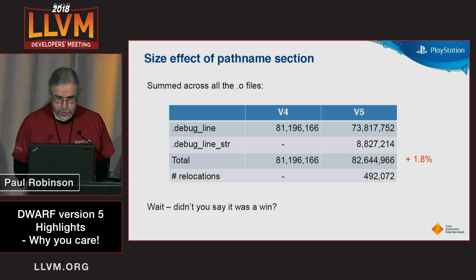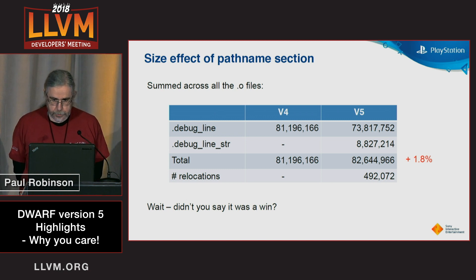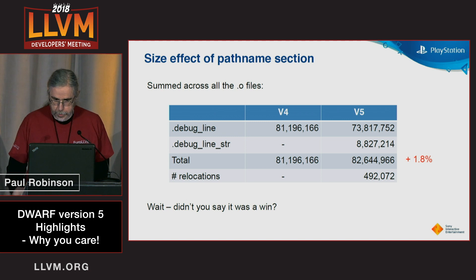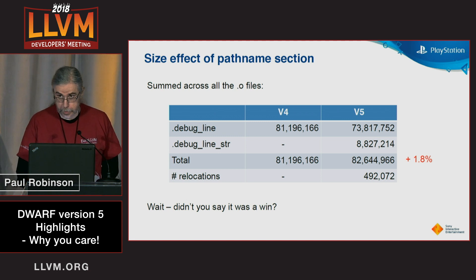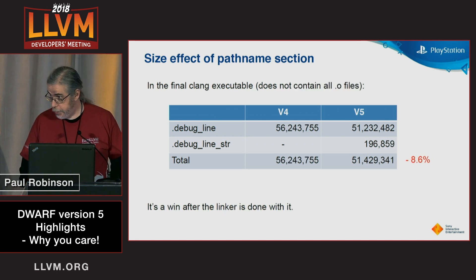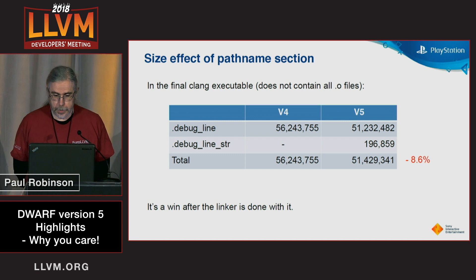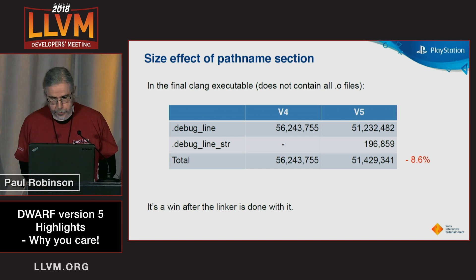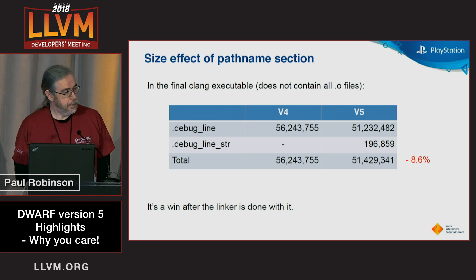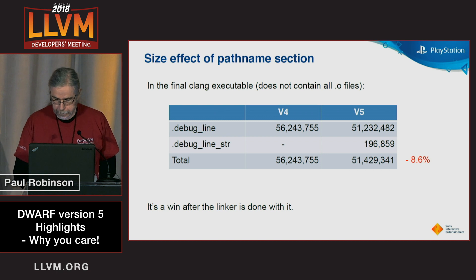On the left we have v4, on the right we have v5, which is actually 2% bigger with a bunch of relocations — I thought we were saving space! But once the linker is done with it, we are actually 8.5% smaller.